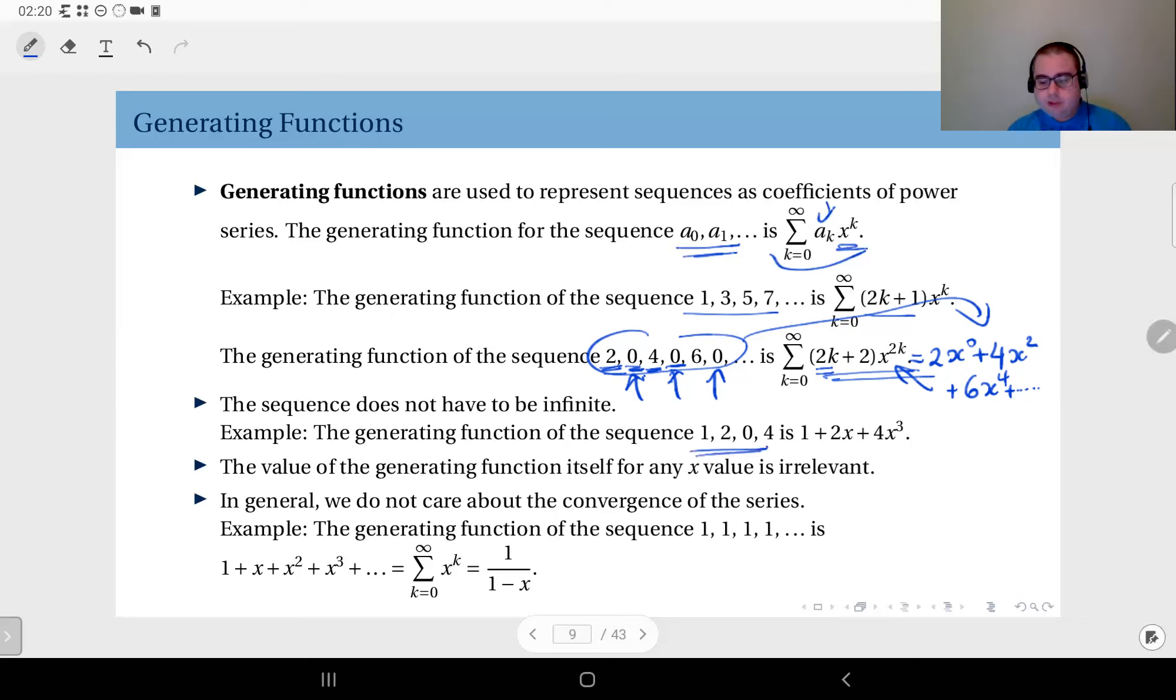If your sequence is only of length four, consisting of the numbers 1, 2, 0, and 4, then the generating function of that sequence would be 1 times x to the power 0 plus 2 times x to the power 1 plus 0 times x to the power 2, which doesn't appear here, plus 4 times x to the power 3, and that's it.